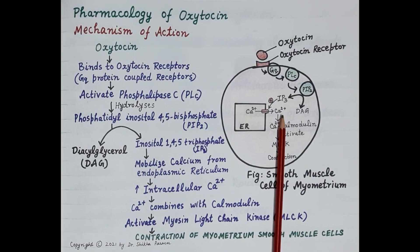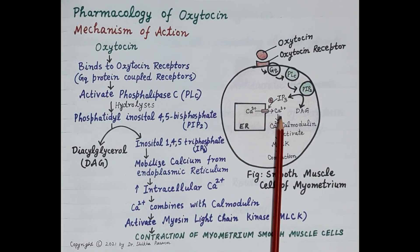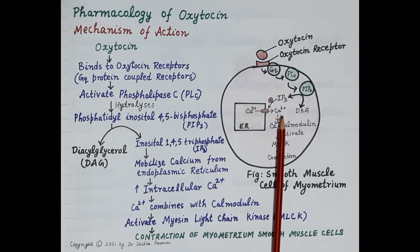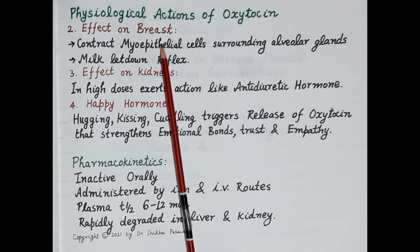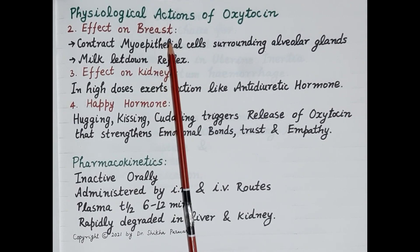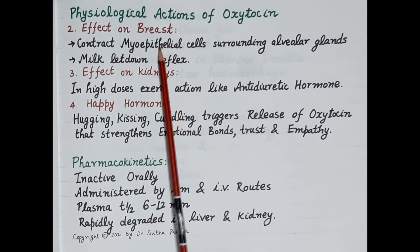So the increase in cytoplasmic calcium is the most prominent action of oxytocin, responsible for contraction of smooth muscles and further contraction of the myometrium. This causes contraction of the uterus and thus oxytocin facilitates childbirth.